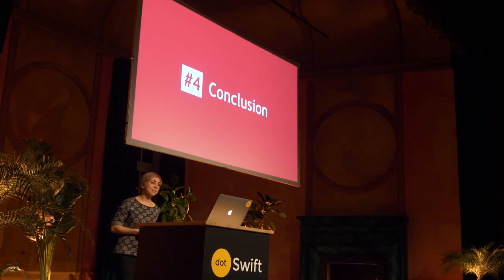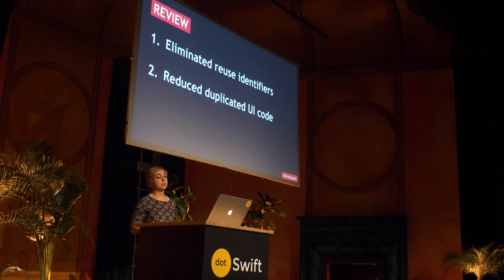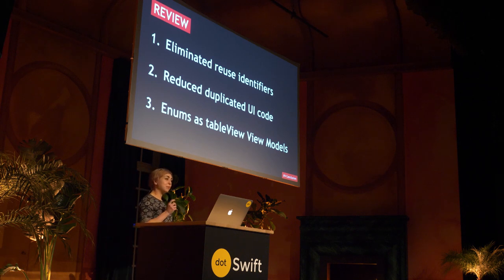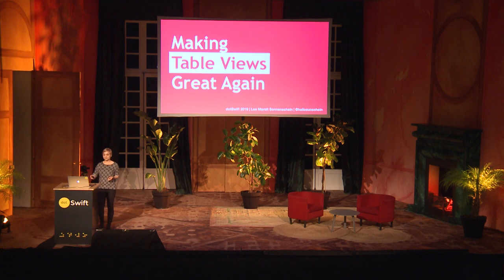Time to wrap up. This talk came about from my love-hate relationship with table views, and my goal was to give you a few concrete examples on how to improve them by being more Swifty — not just for the sake of it, but because it's actually beneficial. We looked at how to use generics and protocols to eliminate the reuse ID, how to create a generic UITableViewCell to reduce duplicate UI code, and how to manage the data of a static table view entirely through an enum. I really hope that you learned something new that you can apply to your projects and make your own table views great again. Thank you.